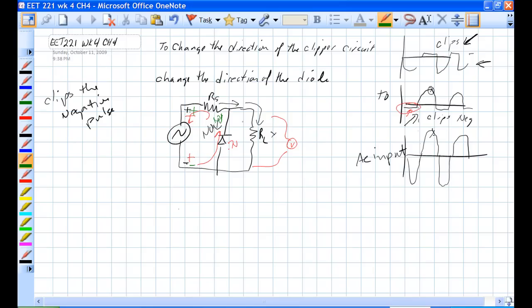And it all goes through RL and we have a voltage drop across RL right there.